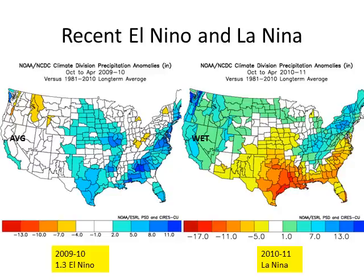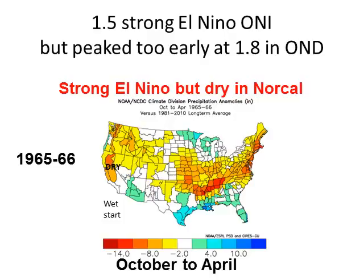Our most recent El Niño from 2009-2010 produced above-normal precipitation, but only to the immediate coast of California. And our last really wet year in California was actually a La Niña year. Also, a strong El Niño can sometimes have a big impact but only for a couple of months — in 1965-66, it was very wet in November and December across Southern California and then pretty much dried out, resulting in Northern California ending up dry despite a strong El Niño.